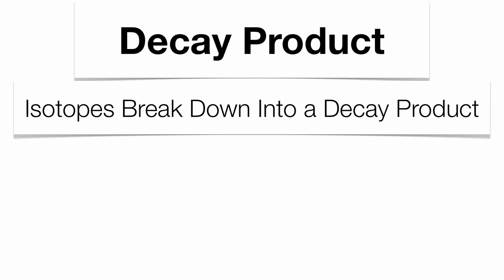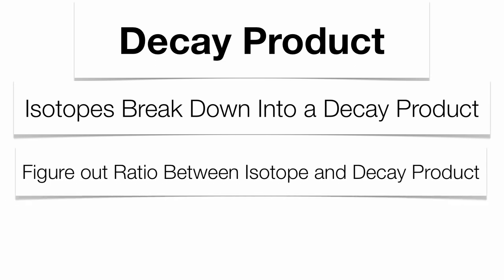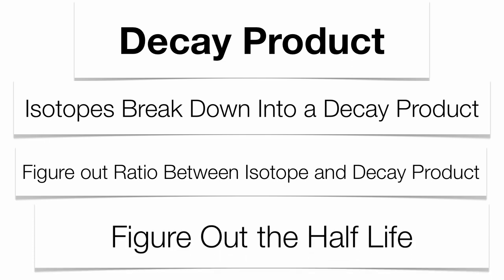These isotopes are going to break down within a certain amount of time, and what they're going to do is they're going to break down into what's called a decay product, or sometimes it's called a daughter product. And the way that you're going to figure out how old the substance is, is by figuring out the ratio between the isotope itself and what it's going to break down into called the decay product, or sometimes called the daughter product.